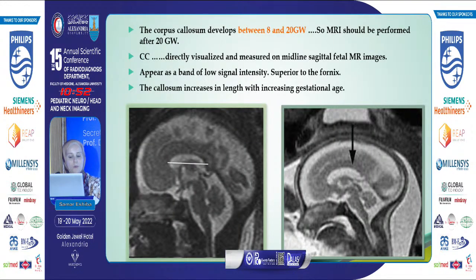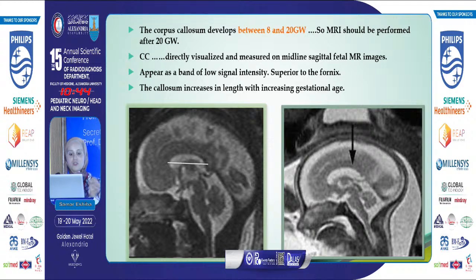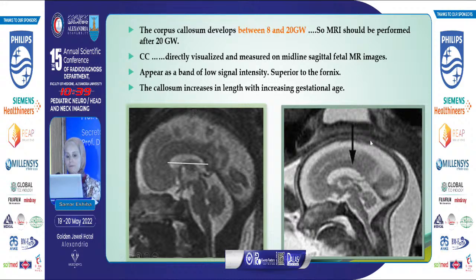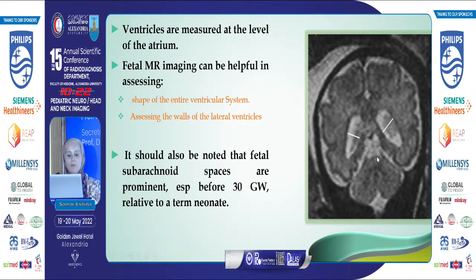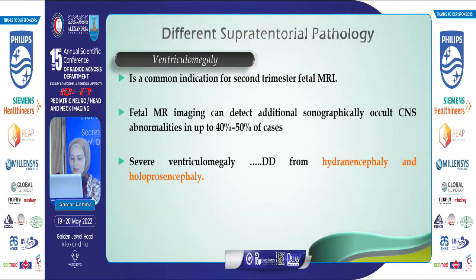We can also assess the corpus callosum, which develops between 8 to 20 gestational weeks. MRI should be done after 20 gestational weeks to assess the corpus callosum, which is directly visualized and measured in the midline sagittal fetal MRI as a band of low signal intensity superior to the fornix. We can also assess and measure the ventricles at the level of the atrium, with MRI helping to assess the shape of the entire ventricular system and the wall of the lateral ventricles.